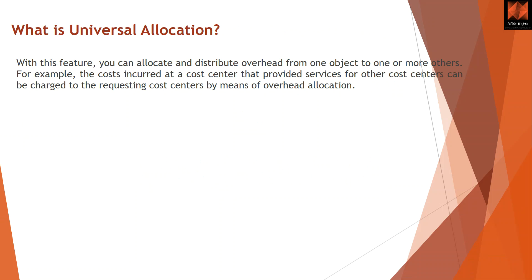So what is universal allocation exactly? With this feature, you can allocate and distribute overhead from one object to another or more. For example, the cost incurred at a cost center that provided services for other cost centers can be charged onto the requesting cost center by means of overhead allocations.